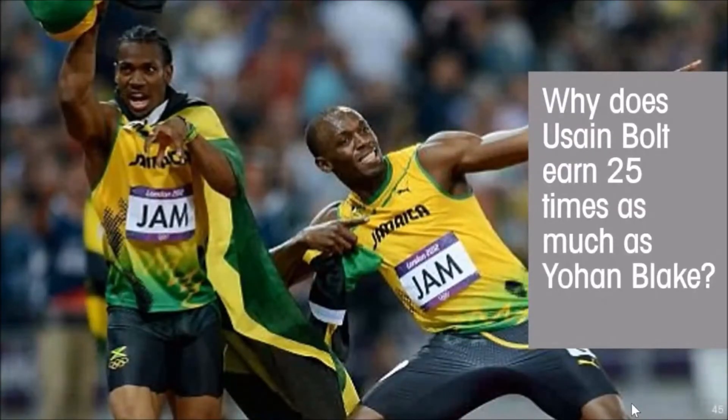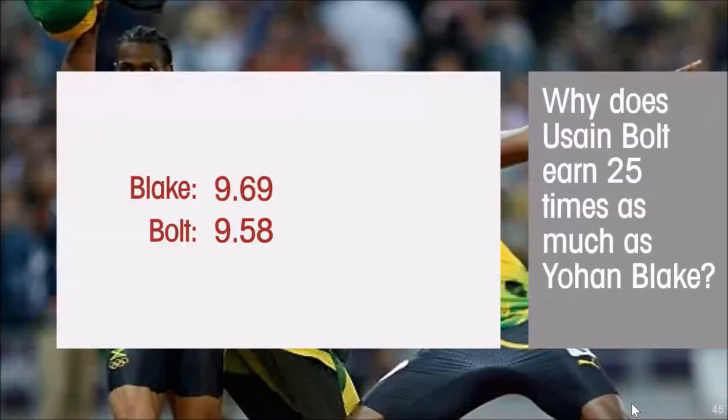Why at their peak did Usain Bolt earn 25 times as much as Johan Blake? If you look at their average annual earnings at their peak, Usain Bolt earned upwards of 25 million US dollars. Usain Bolt's fastest time, the world record over 100 meters, is 9.58 seconds. Johan Blake's personal best is 9.69 seconds. If you do the arithmetic, Usain Bolt is 1% better—Blake's time is 1.15% slower. So there's roughly a 1% difference in their ability.